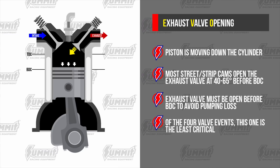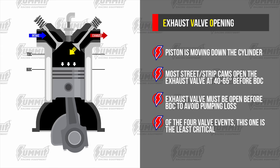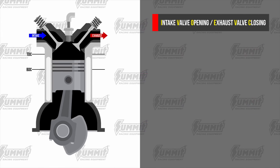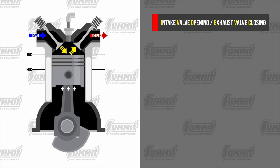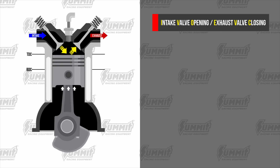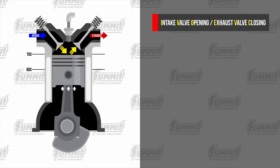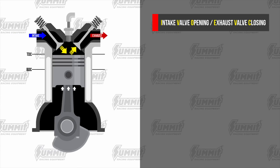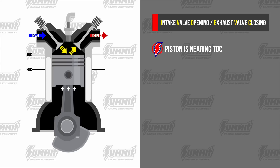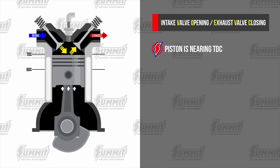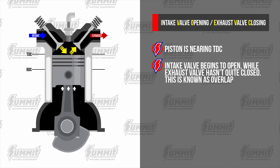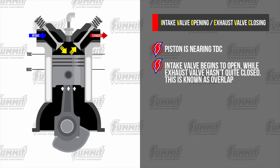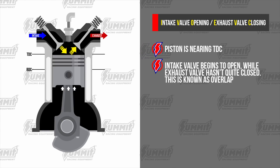Of all the events, exhaust opening is the least critical because it's assisted by the residual cylinder pressure. Next, we'll cover two of the events at once: intake valve opening and exhaust valve closing — overlap at the beginning of the intake stroke. Near the end of the exhaust stroke, the piston is nearing top dead center. The intake valve is starting to open and the exhaust hasn't quite closed. This is called overlap.